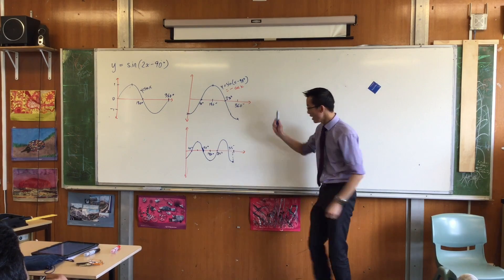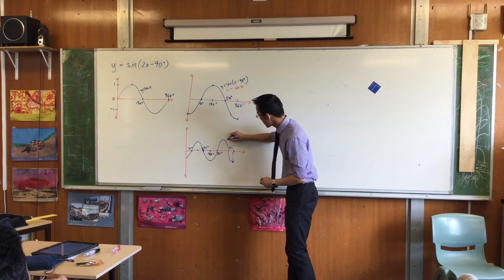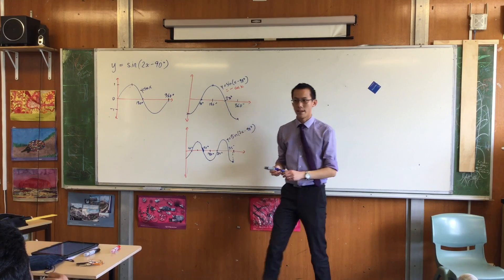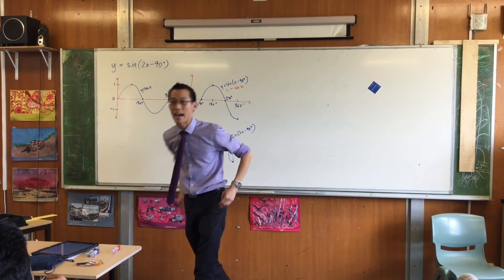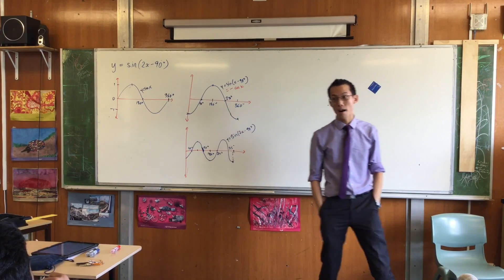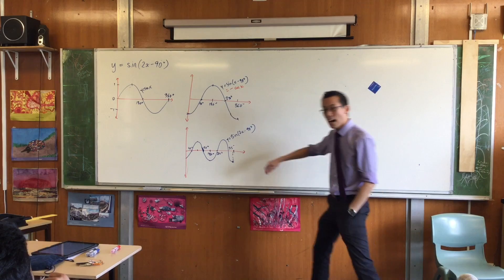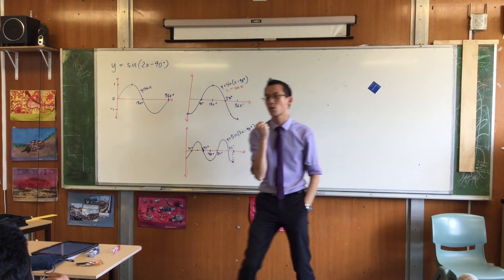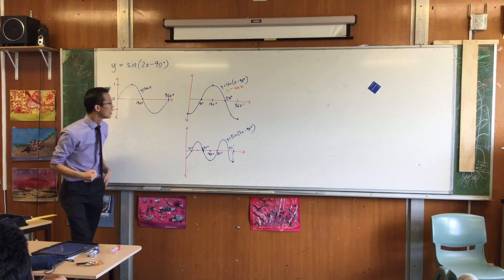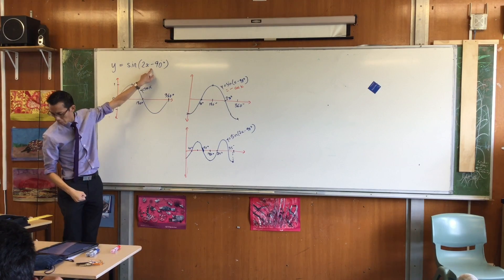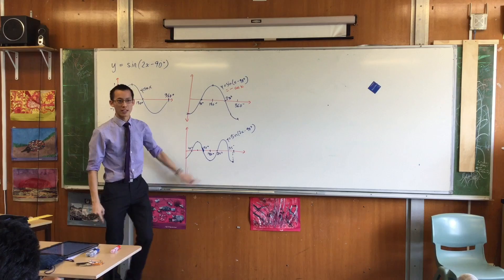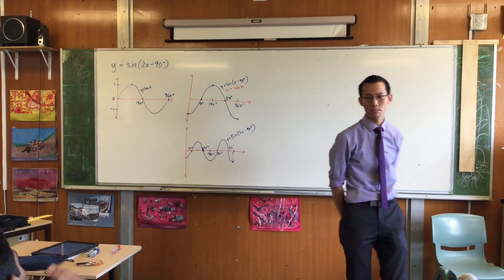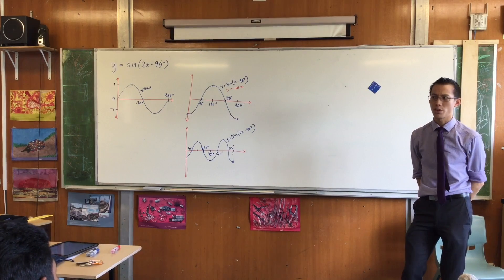Okay. This is the graph. This is sine 2x minus 90 degrees. Now, I want you to take off your student hat for a moment, and I want you to put on your teacher hat, your marker's hat. Okay? Now that you know this is what the graph is supposed to look like, what do you think is the most common error students make when they see this and fail to graph this? What do you think they graph instead? Have a think.